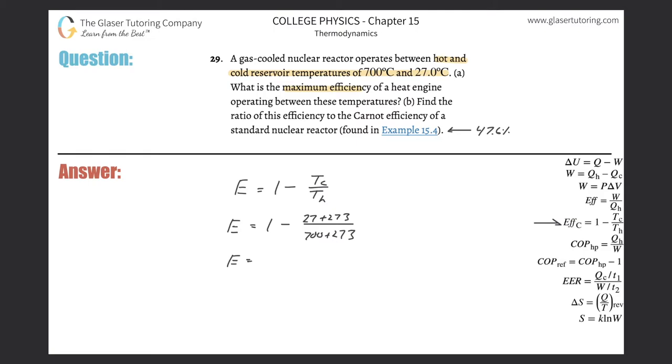And then we can just simply calculate. So let's do the fraction first. 27 plus 273, divided by 700 plus 273, a fraction of about 0.3, and then 1 minus that, so it's gonna be about 0.7 or so. So this will be 0.692.